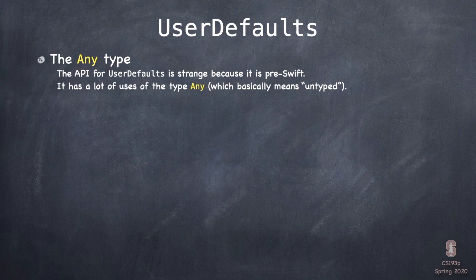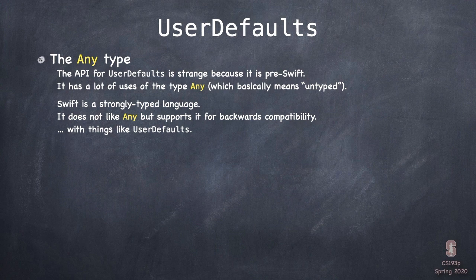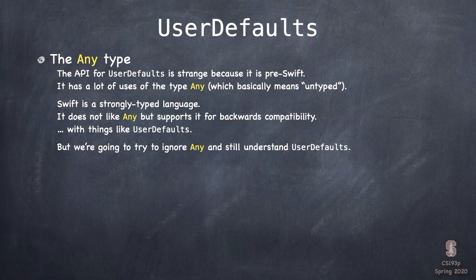Prominently in the UserDefaults API is a type in Swift called `any`. `any` is basically a type that means untyped — it's like it doesn't really have a type. Swift is a strongly typed language and does not like `any`. It has this type `any` just for backwards compatibility with things like UserDefaults. We really don't want anything to do with `any` as SwiftUI programmers, but we want to use UserDefaults, so we're going to try to ignore `any` in the UserDefaults API.